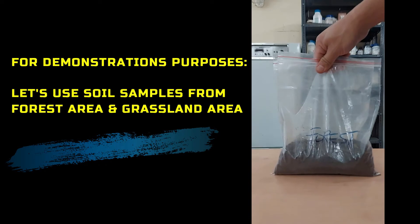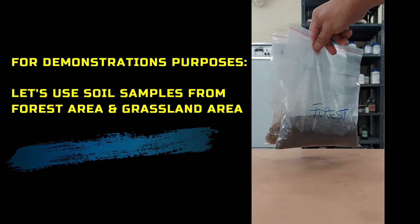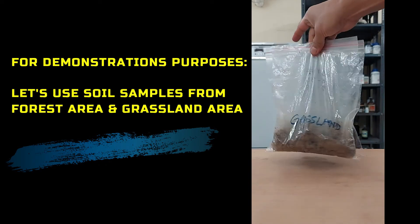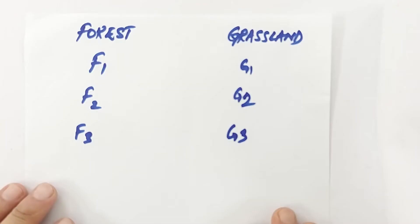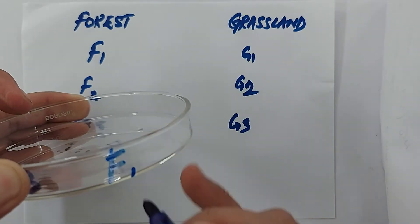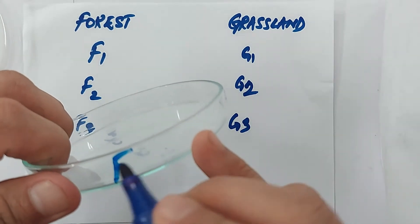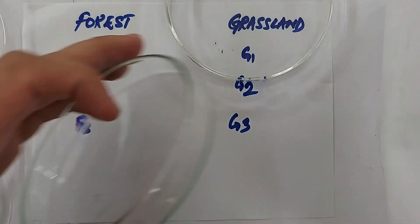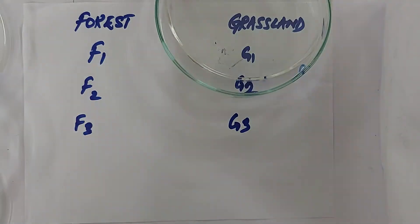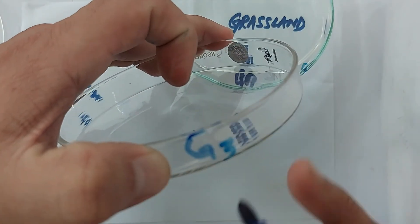Next, take the petri dishes and mark or number them. In order to avoid confusion, let us code the petri dishes for forest area as F1, F2, and F3, and for grassland area as G1, G2, and G3.